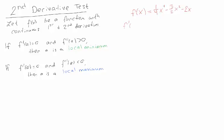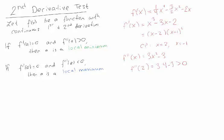We take the derivative and find where it's equal to 0. By factoring the first derivative, we find that the critical points occur when x equals 2 and when x equals -1. Let's apply the second derivative test. With the second derivative, if I plug in 2, I get 3 times 4 minus 3, which is positive. So that means x equals 2 is the location of a local minimum.